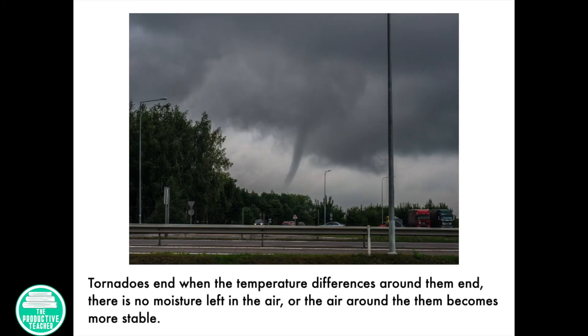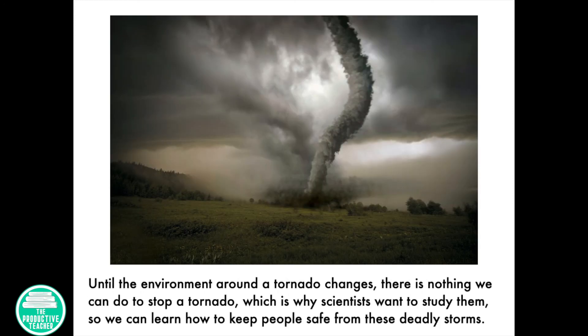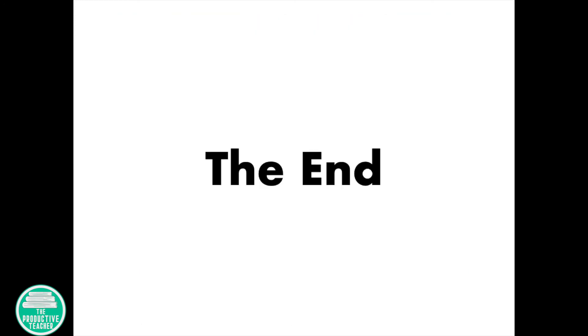Tornadoes end when the temperature differences around them end, there is no more moisture left in the air, or the air around them becomes more stable. Until the environment around a tornado changes, there is nothing we can do to stop a tornado, which is why scientists want to study them, so we can learn how to keep people safe from these deadly storms.